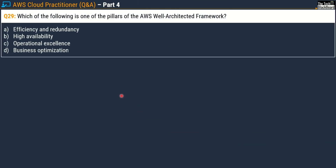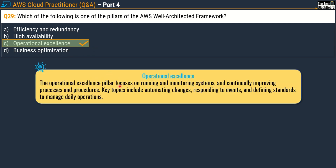Question 29: which of the following is one of the pillars of the AWS Well-Architected Framework? Options are Efficiency and Redundancy, High Availability, Operational Excellence, or Business Optimization. The correct answer is Option C, Operational Excellence — which focuses on running and monitoring systems, continually improving processes and procedures, with key topics including automating changes, responding to events, and defining standards to manage daily operations.